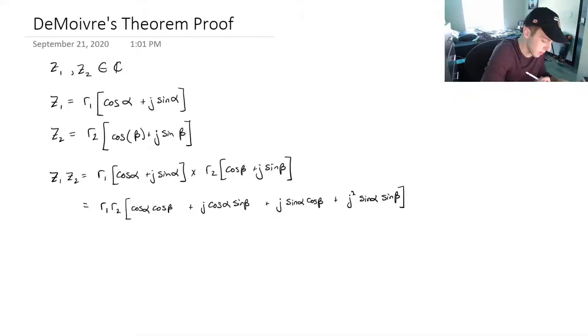And we can simplify this just a little bit. r1 times r2. And we've got, I'm just going to write this as cos of alpha cos of beta. And then, well, we know that this j squared...